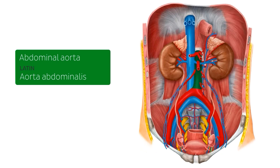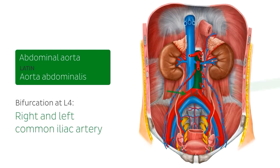The abdominal aorta begins after passing through the diaphragm, and descends into the abdominal cavity until it reaches the level of the fourth lumbar vertebra, L4. Once it's there, it bifurcates into the right and left common iliac artery. We'll have a chat about the common iliac arteries and their branches towards the end of this tutorial. But first, let's review the branches of the abdominal aorta, which altogether are responsible for supplying the abdominal viscera and the musculature.